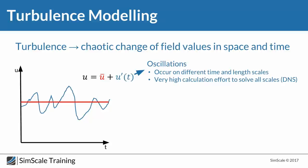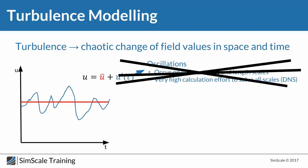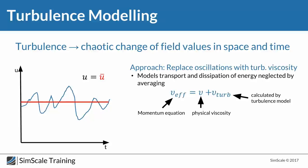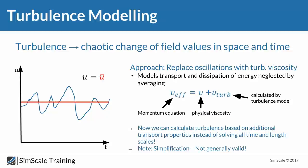Instead, we focus on the mean value u-bar. The effective momentum equation gives us: effective viscosity equals physical viscosity plus turbulent viscosity. For this turbulent viscosity, we use additional turbulence models to model this value. Turbulent viscosity doesn't exist in reality — it's a model. We calculate turbulence based on additional transport properties instead of solving all time and length scales. We model it rather than solving directly.